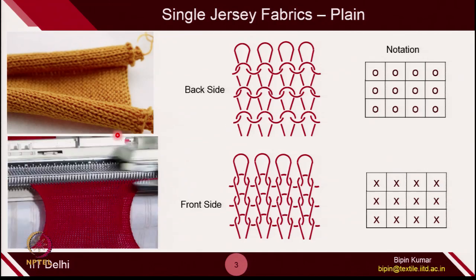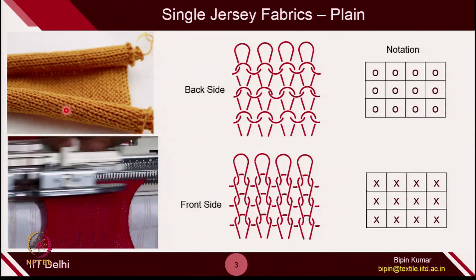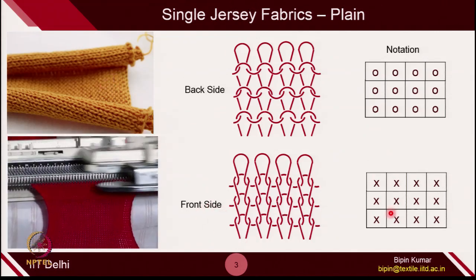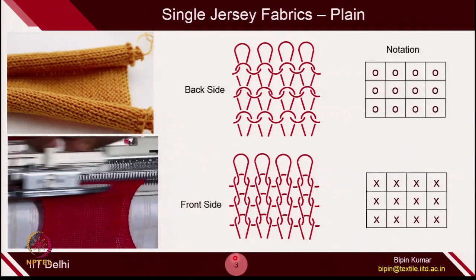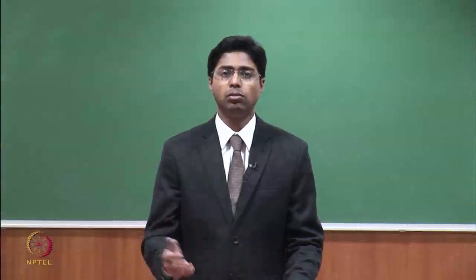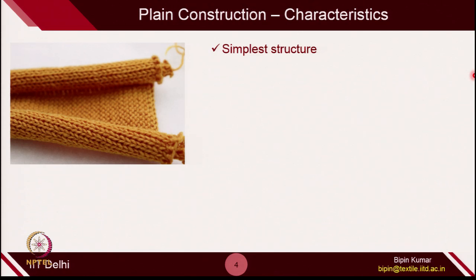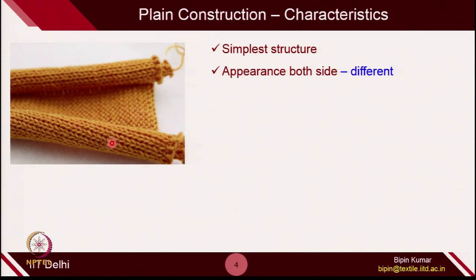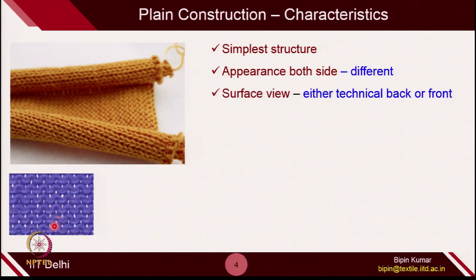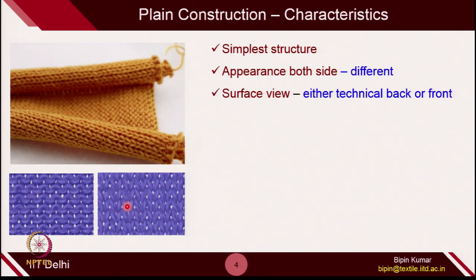If you see one side, you will observe the technical back side of the loop — denoted by a circle in a box. On the back side, the head and sinker part are visible. If you flip that fabric, you will observe the leg part. The front side nature of loop is represented as technical front, denoted by a cross. The fabric remains the same; only the way you look at it requires a different representation. The appearance is different on both sides — technical back shows head and sinker loops, technical front shows the leg part.